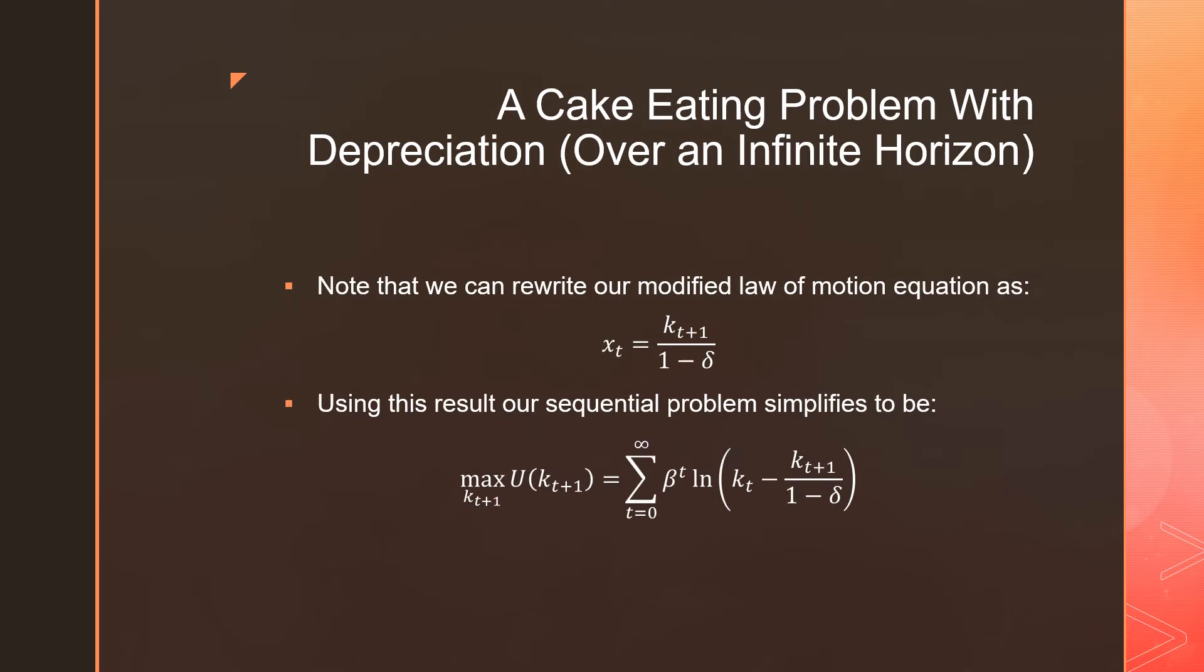So note, we can rewrite our modified law of motion as the following, defining X_T being equal to the cake size in next period discounted by one minus this depreciation rate. Using this result, our sequential problem simplifies to the following.